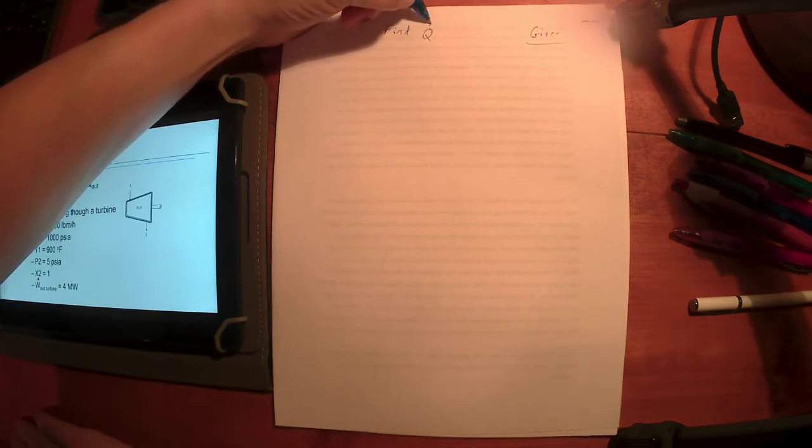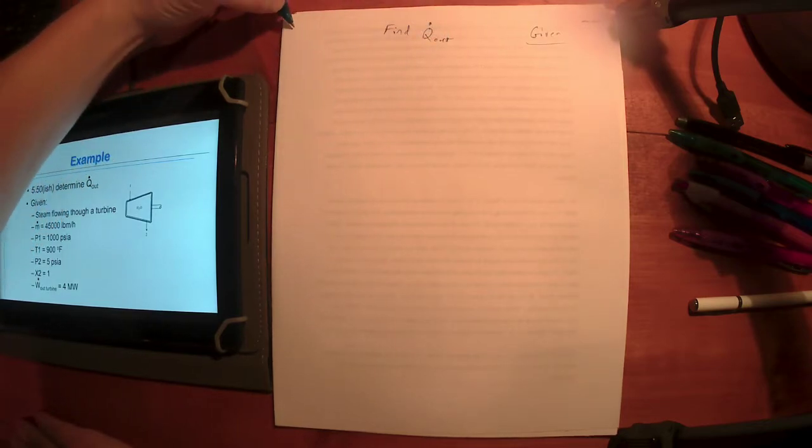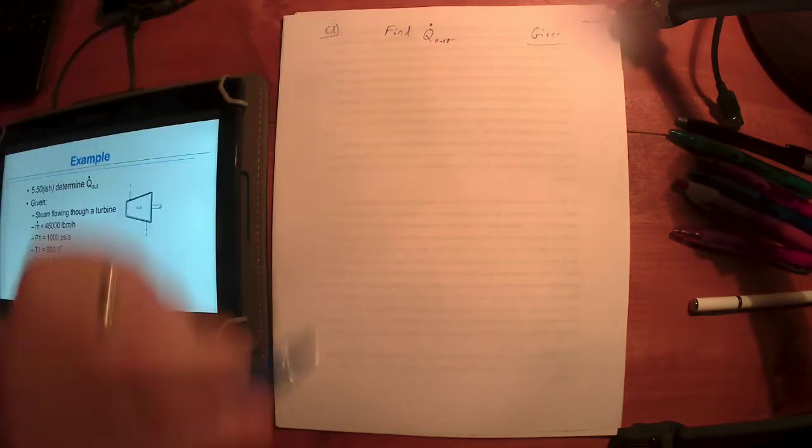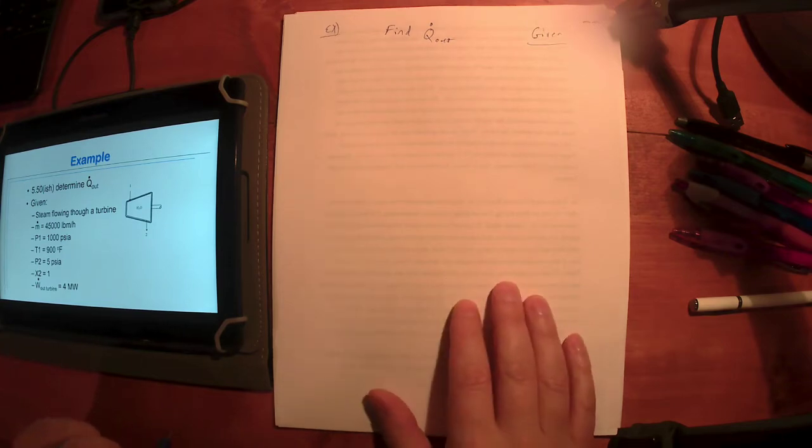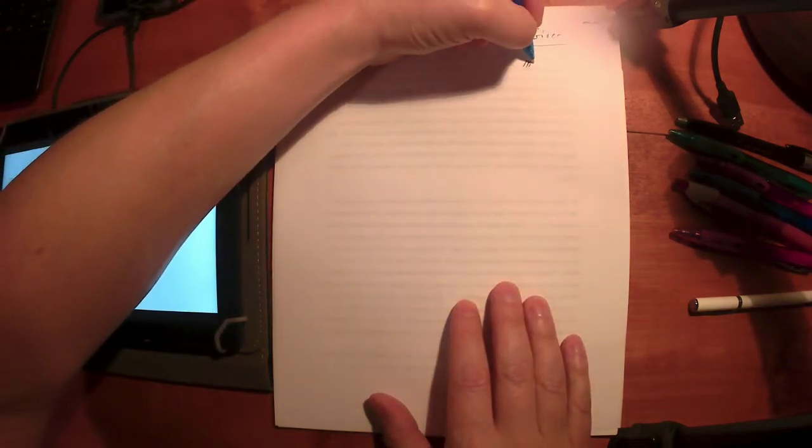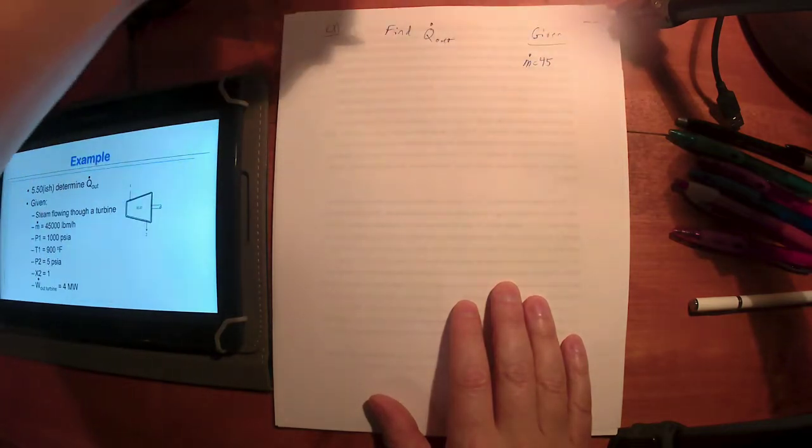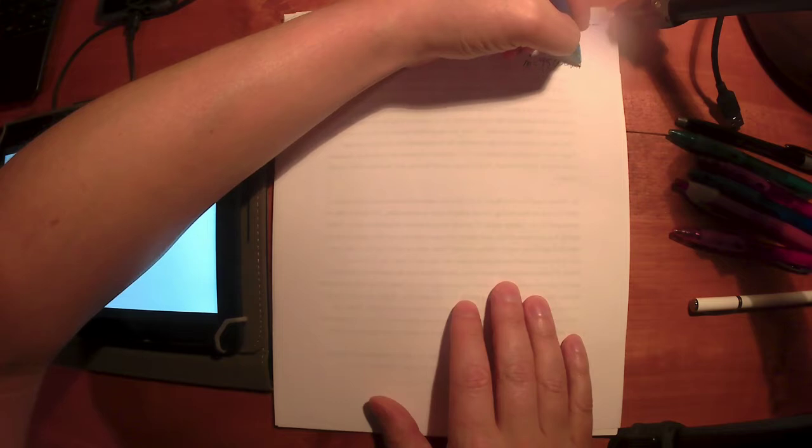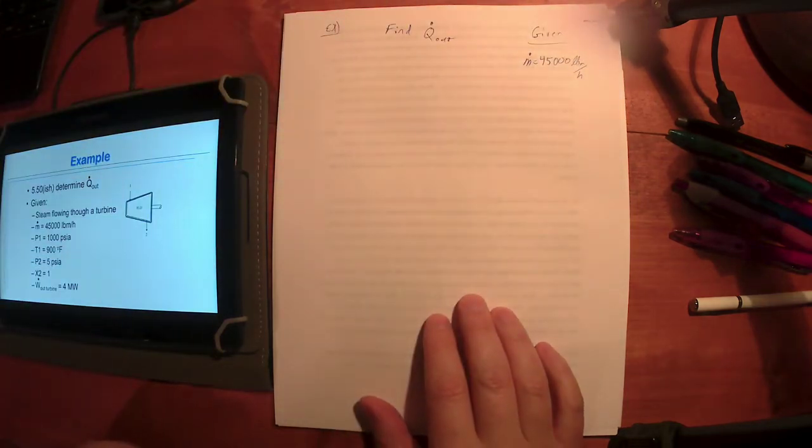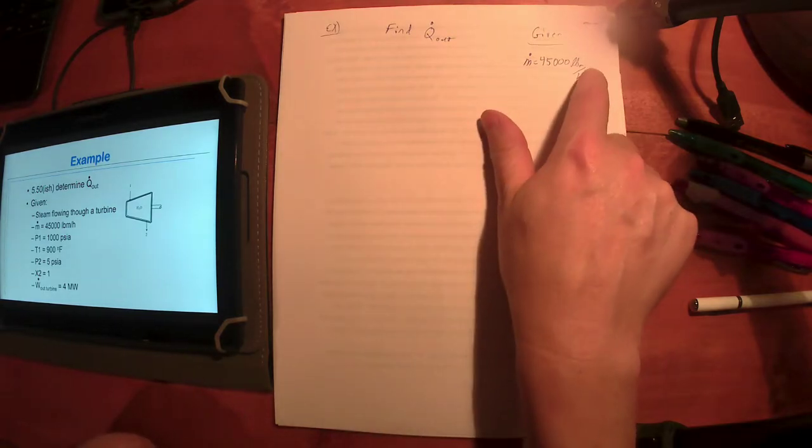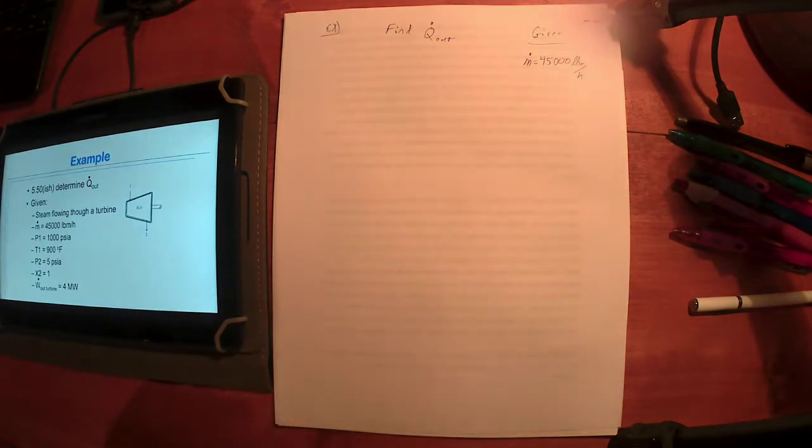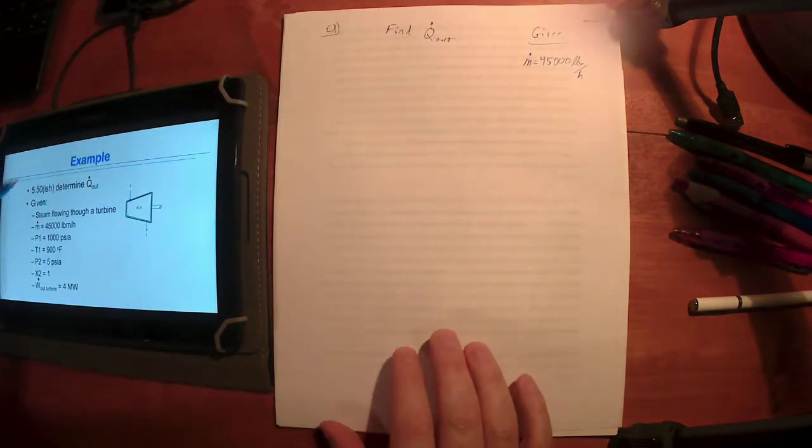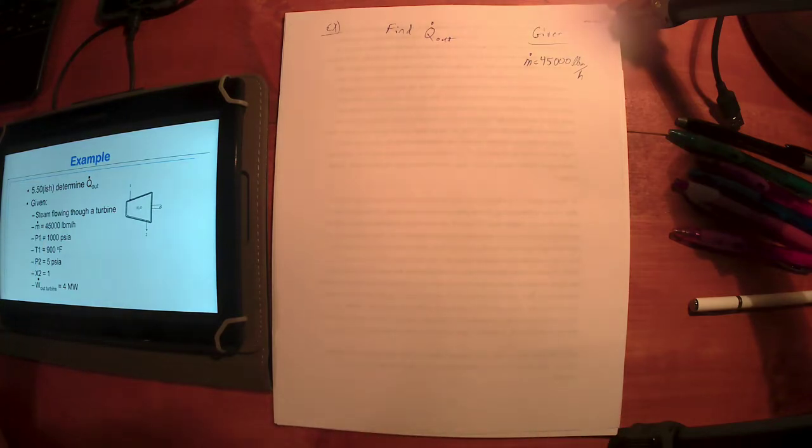First thing, what it's asking for is it wants to find the rate at which this turbine is losing heat. We've got a mass flow rate here of forty five thousand pound mass per hour. Kind of a weird unit. If you like, you can just convert that, divide that by thirty six hundred and that'll give you pound mass per second. That's a lot of times when I get something that's per hour, it's one first things I'll do.